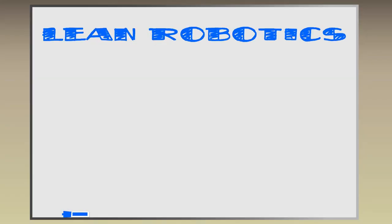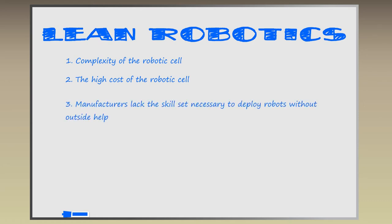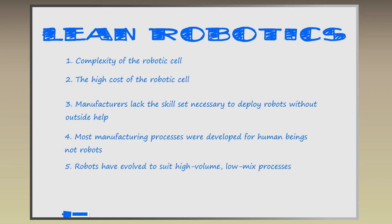The reasons for this are: complexity of the robotic cell, the high cost of the robotic cell, manufacturers lack the skill set necessary to deploy robots without outside help, most manufacturing processes were developed for human beings not robots, robots have evolved to suit high volume low mix processes, and lack of standards in the robotics industry. These challenges are made simpler by following the precepts found in Lean Robotics.